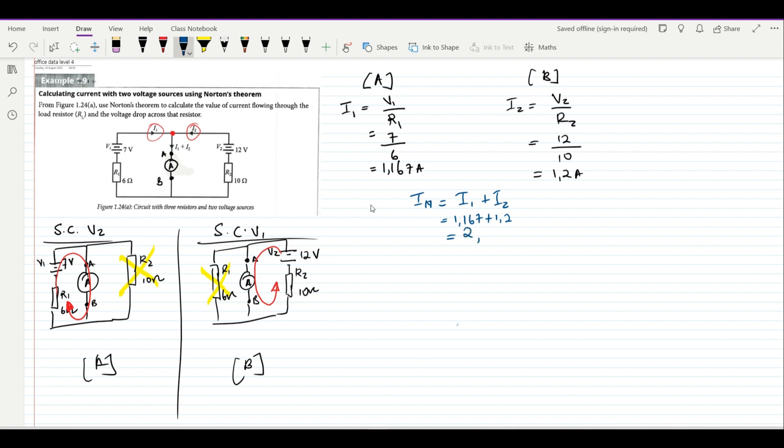If these two voltage sources were connected in such a way that current will be moving in different directions, we would have then subtracted.